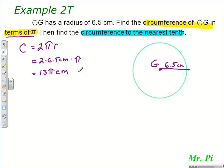Now finding it to the nearest tenth, you just simply type in 13 times pi. If you don't have a pi key on your calculator, you can use 3.14. But when you do that, either way, you're going to get that the circumference of circle G is approximately equal to 40.8 centimeters.